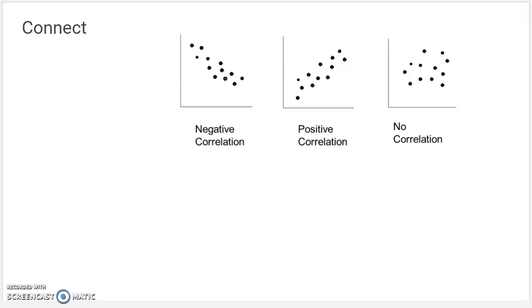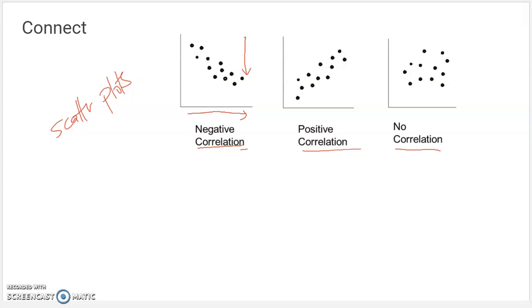We looked at a bunch of vocabulary about these creations called scatter plots yesterday. Scatter plots can have a negative correlation, a positive correlation, and no correlation. A negative correlation generally meant as this variable increased, this variable decreased. You'll notice they're correlated — they're not perfectly lined up, but generally they trend down. Like if there was a line, they would have a negative slope.